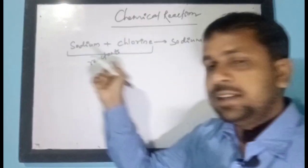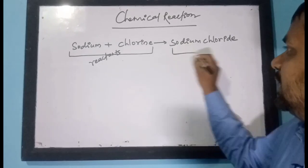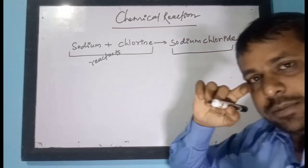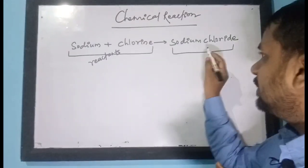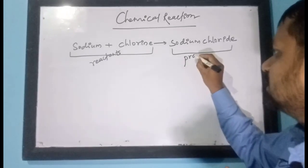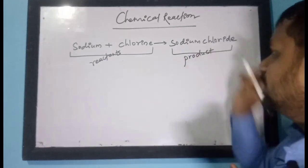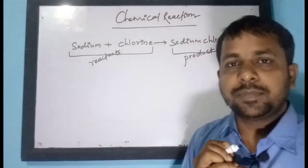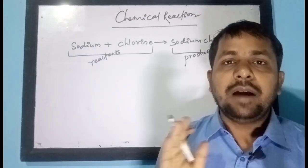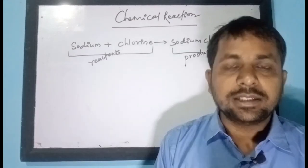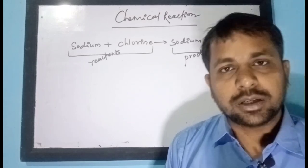After the reaction, sodium chloride is formed, so sodium chloride is called the product. The substance that is formed after the chemical reaction is called the product.